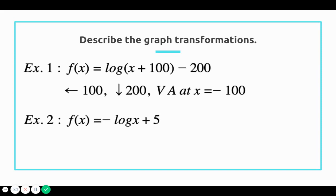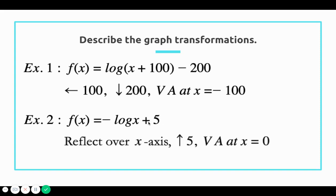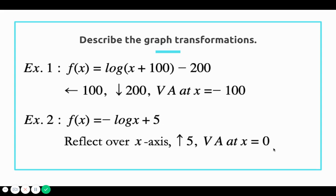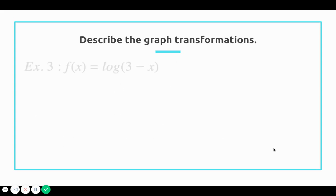Second example: f of x equals negative log x plus 5. The negative sign in front reflects the function over the x-axis, and the plus 5 moves the function up. Neither of these transformations changes the vertical asymptote, so the vertical asymptote stays at x equals 0.